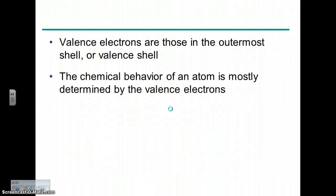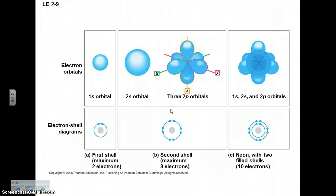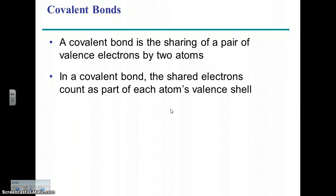That outer shell, that valence shell, is what really gives the atoms their particular properties. We're not going to worry about orbitals.